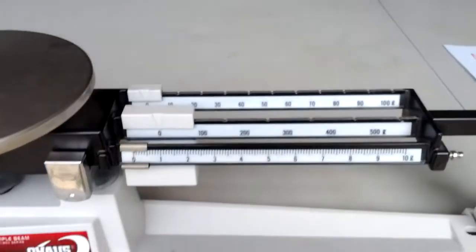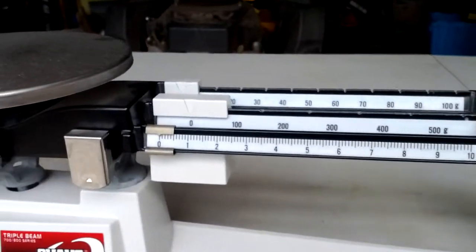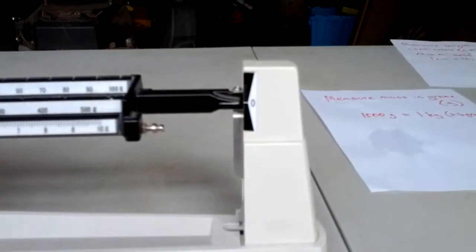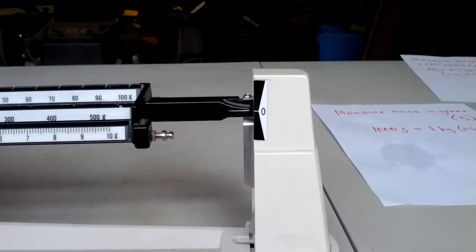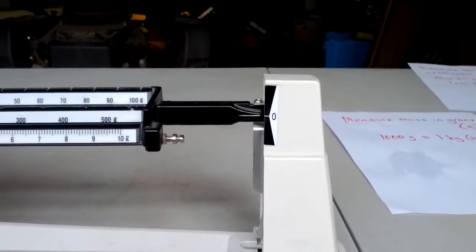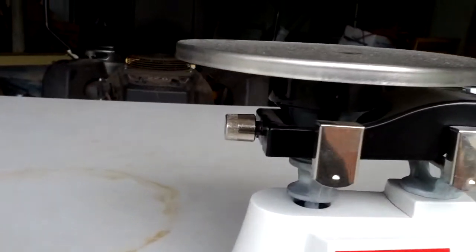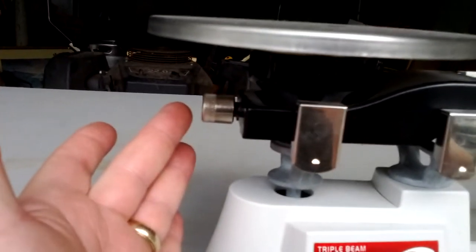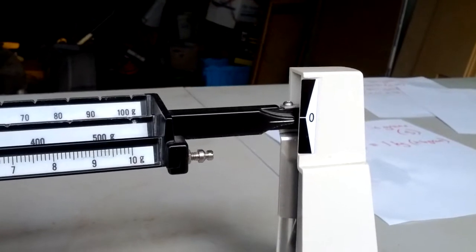So we're going to see if it's zeroed. All the riders have to be on zero. And if they are, then the little mark over here should be right at the zero mark on the scale. And it is. If it is not, you can adjust it. There's a little screw on the end here that you can adjust to make sure that it's right on zero. But this one is on zero, so we are not going to mess with it.